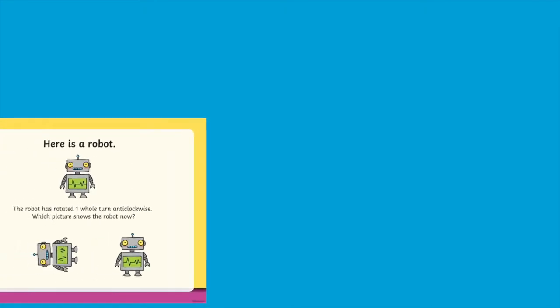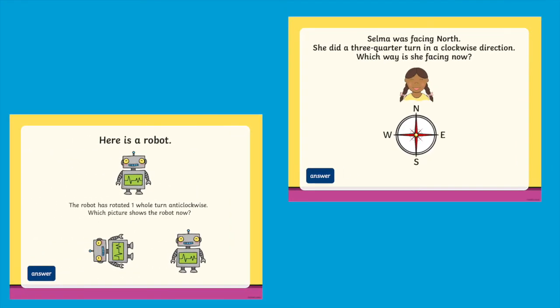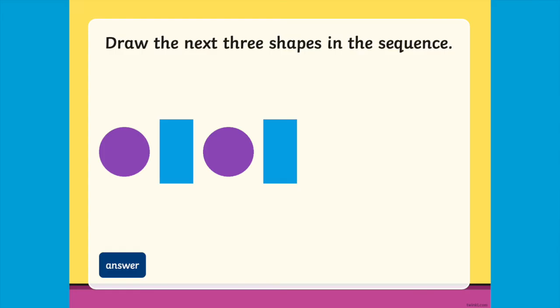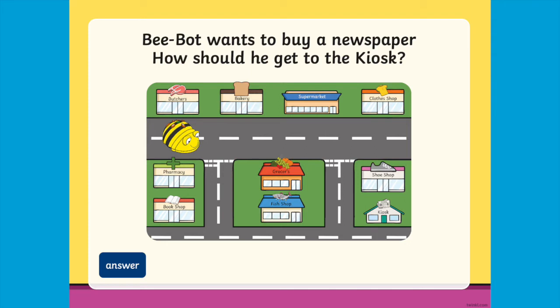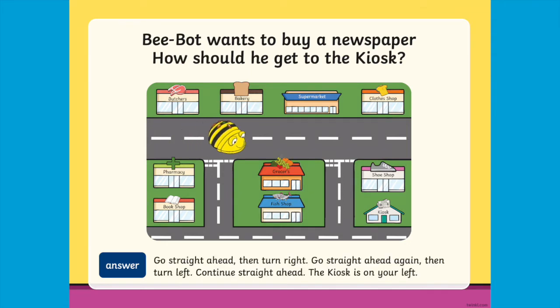Some of the questions require your children to use their knowledge of clockwise and anti-clockwise directions in order to answer them. Other types of questions require your children to complete sequences. There are even questions that require your children to create a list of instructions that can direct a B-bot from one location to another.